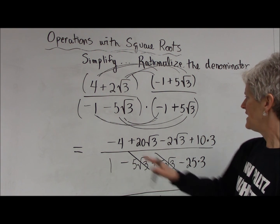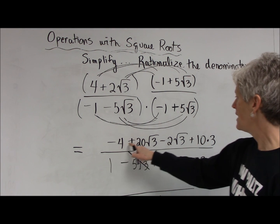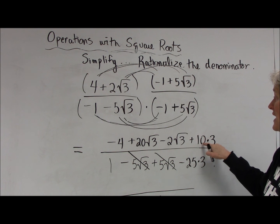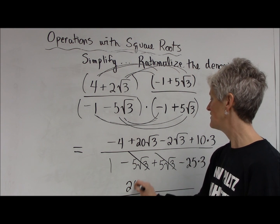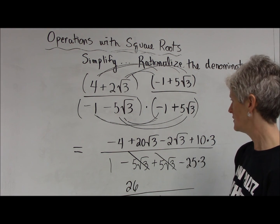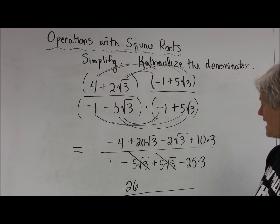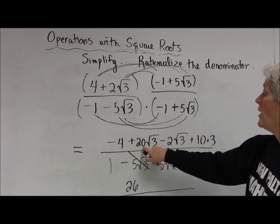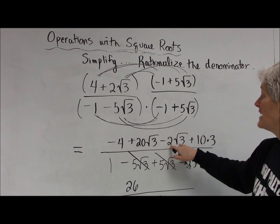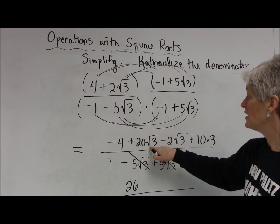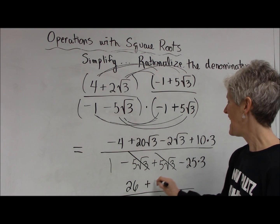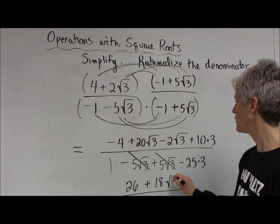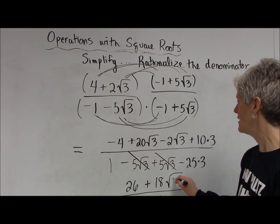In the numerator, double distribution: 4 times negative 1 is negative 4; 4 times 5 root 3 is 20 times the square root of 3; 2 root 3 times negative 1 is negative 2 times the square root of 3; 2 root 3 times 5 root 3 is 2 times 5 which is 10, times square root of 3 times square root of 3 which is 3, giving 30. So the numerator becomes negative 4 plus 30, which is 26, and 20 root 3 minus 2 root 3 — those are like terms — giving 18 times the square root of 3.